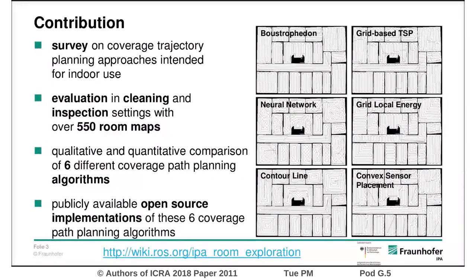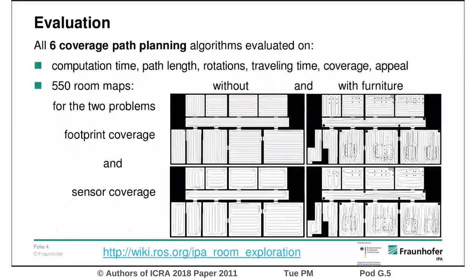We focus on offline planning and thus require a pre-recorded map of the area that should be cleaned. We evaluate the algorithms for cleaning and inspection tasks on 550 different room maps, which are available online. We tested the algorithms with different comparable values — for example, computation time, path length, and also a measure of how predictable the generated trajectories are, which includes how parallel the different parts of the path are to each other.